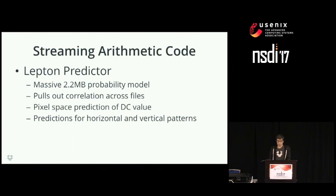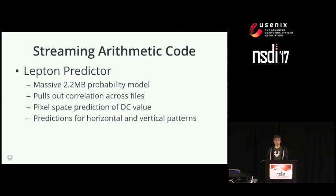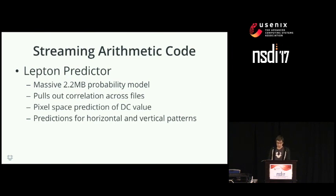Lepton gets about 22% compression by training a massive 2.2 megabyte probability model that seeks out correlations across a whole file. We build on PackJPEG's work by adding special prediction elements to predict the DC element using a pixel-space transformation and predicting all pixels in pixel space. Instead of doing a full file sort like PackJPEG — which doesn't lend itself well to streaming — Lepton instead just tracks statistics as it goes.